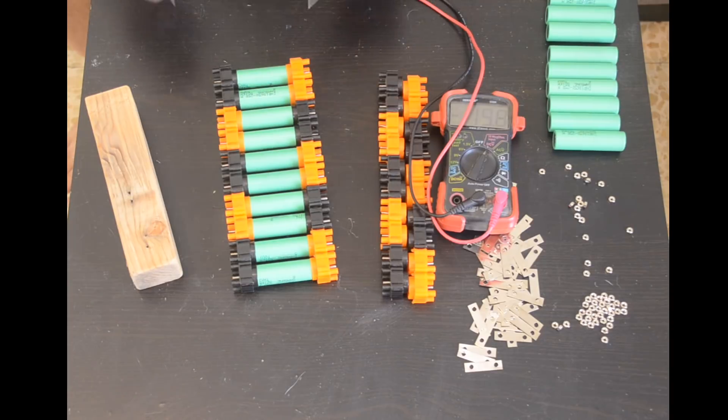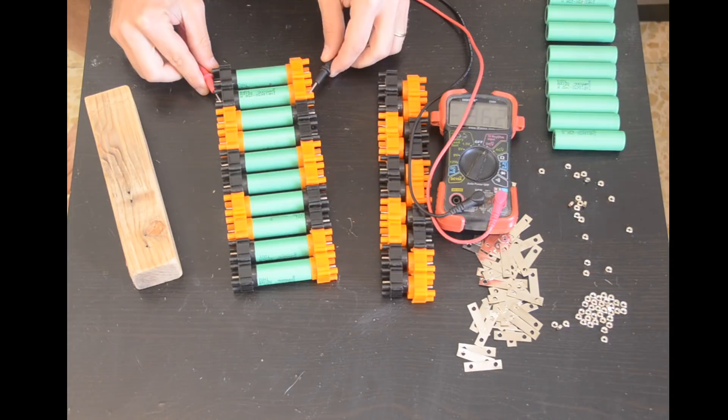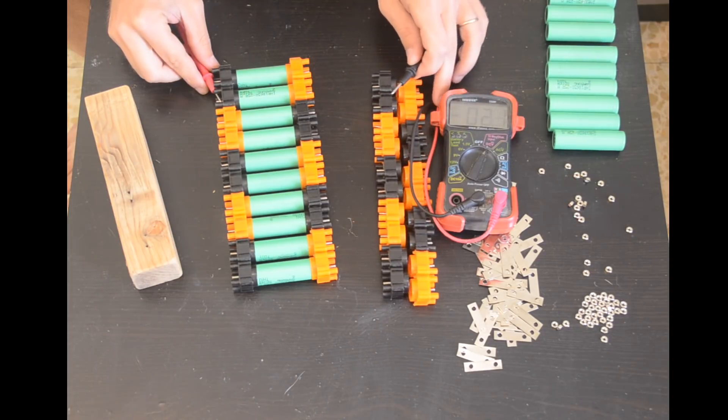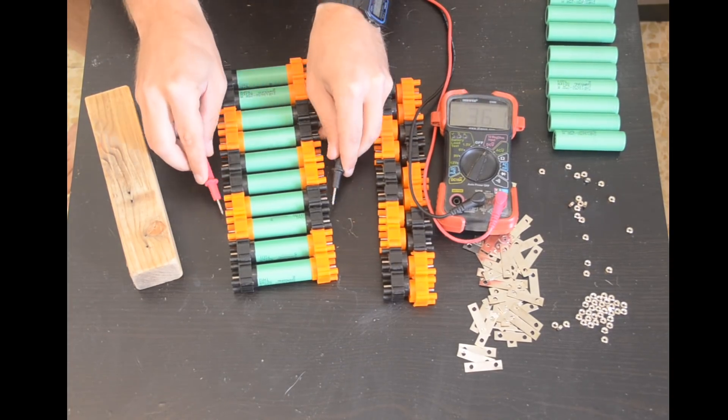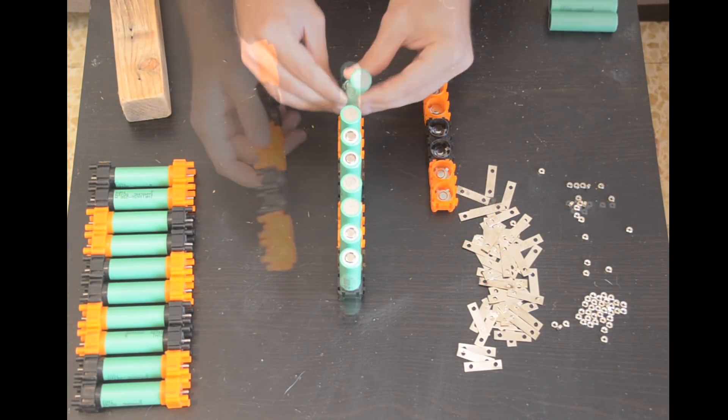I can now confirm that the spring contacts are making contact with the cells by measuring the voltage of each cell via the threaded terminal post. If you can read the voltage of the cells then you're making proper contact. Then I'll repeat the same process to make the second side of the battery.